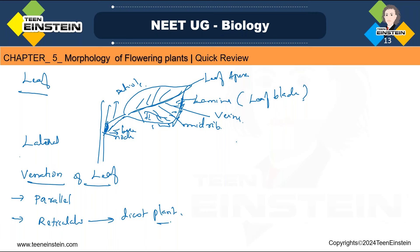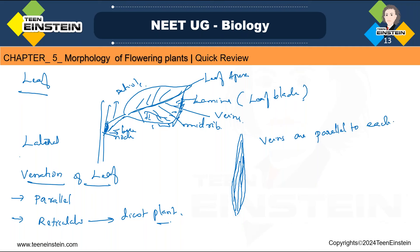Parallel venation — in monocot plants like bamboo leaves, the veins are arranged parallel to each other with no network-like structure. In monocot plants you can see parallel venation.